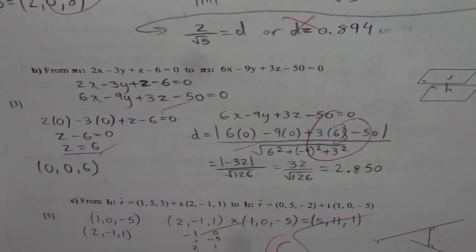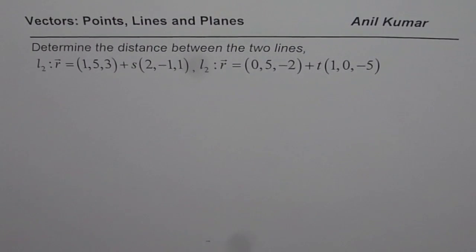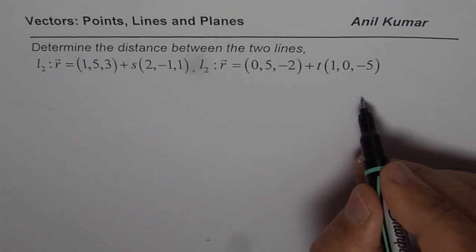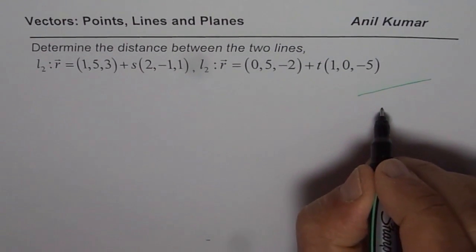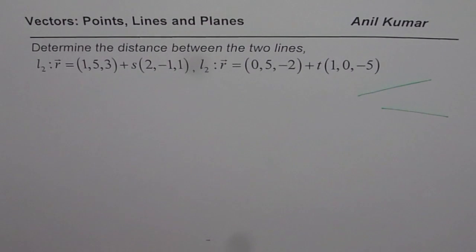So, let us look into this question in details. Now, when we say distance between two lines, we are assuming that they are skew lines. Otherwise, if they are intersecting lines, then they will intersect. The distance will be kind of 0. Now, in skew lines, they are in parallel planes.